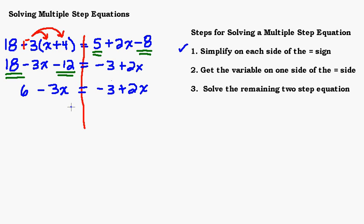Step two is to make sure the variable is on one side of the equal sign. We have x's on both sides, so we want to get those x terms on the same side. We have two choices. I could take the negative 3x term and get rid of it by adding 3x to the left side, making it zero. If I add 3x to one side, I have to add 3x to the other side, combining it with the 2x.